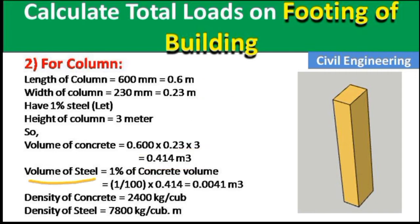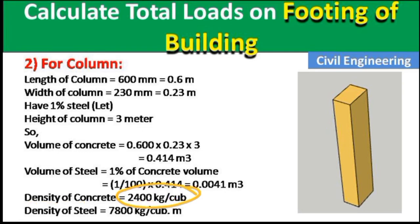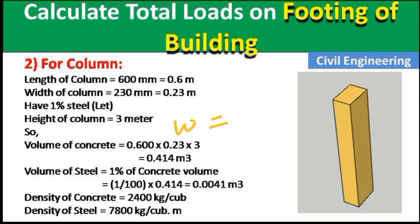Volume of steel = 1% of concrete volume = (1/100) × 0.414 = 0.0041 m³. Density of concrete (PCC) = 2400 kg/m³. Density of steel = 7800 kg/m³. We now have the volume and density for both concrete and steel, so we use the formula: Weight = Volume × Density for each material.